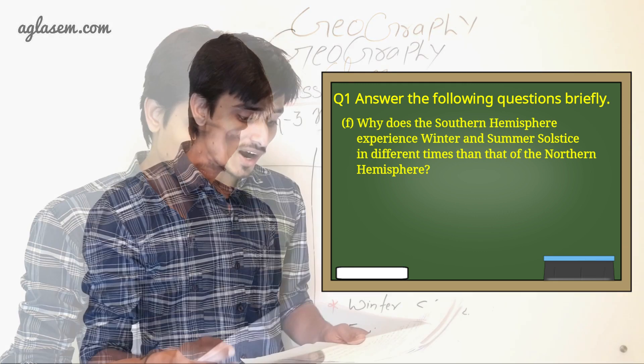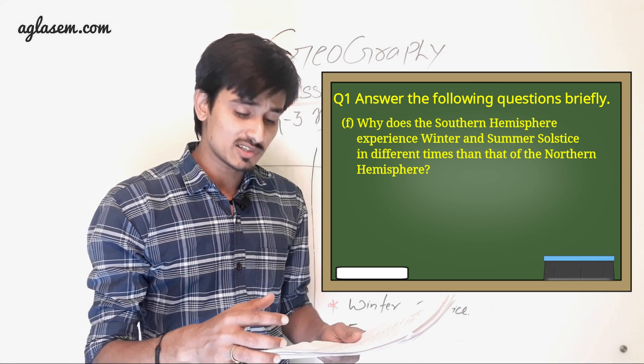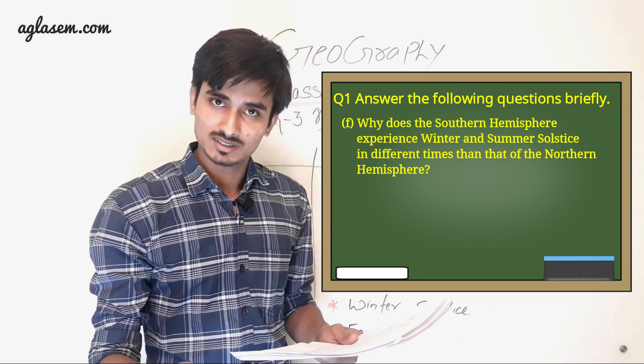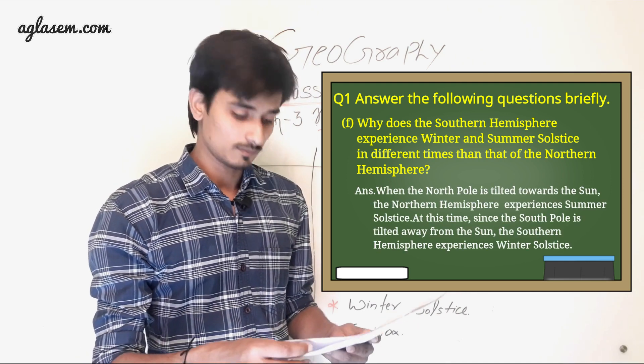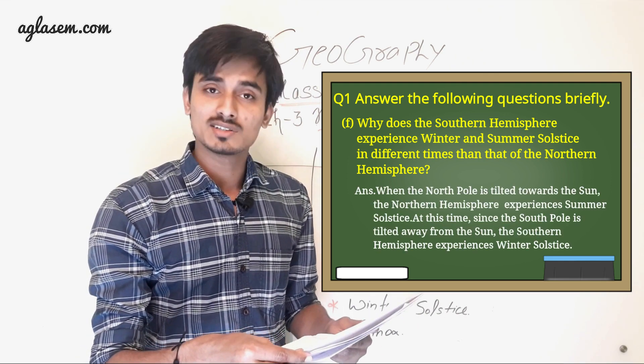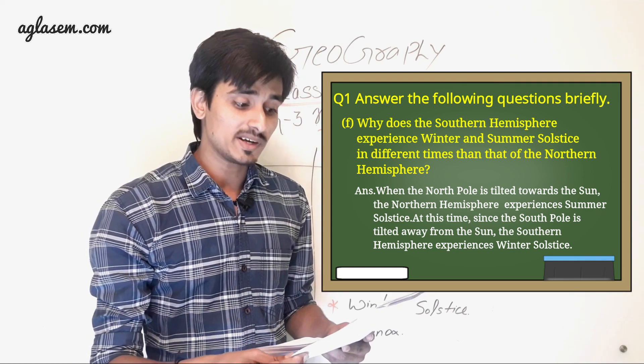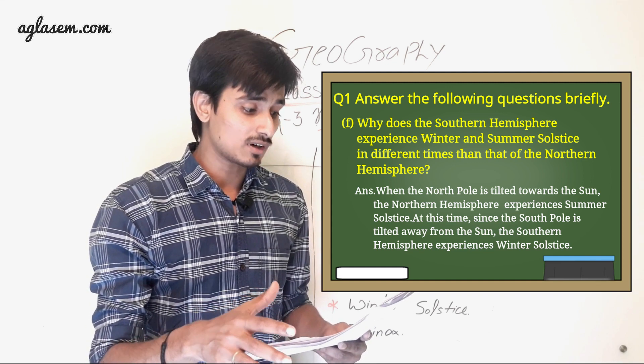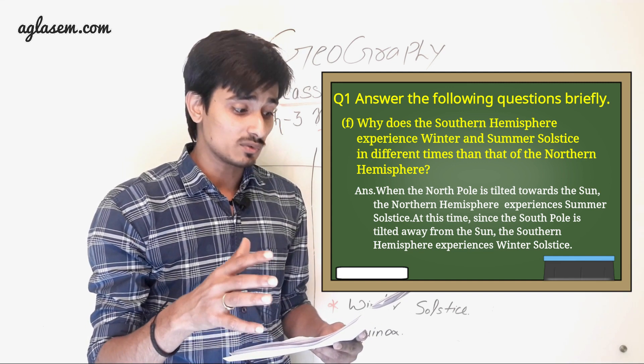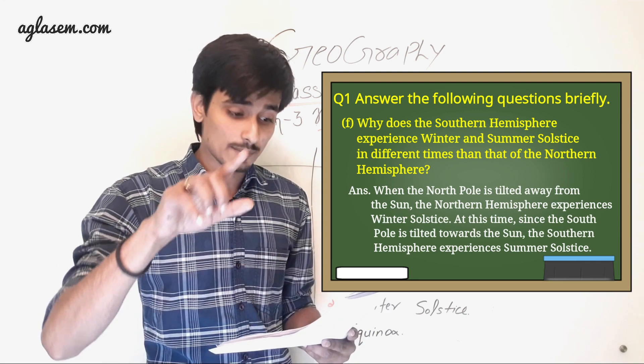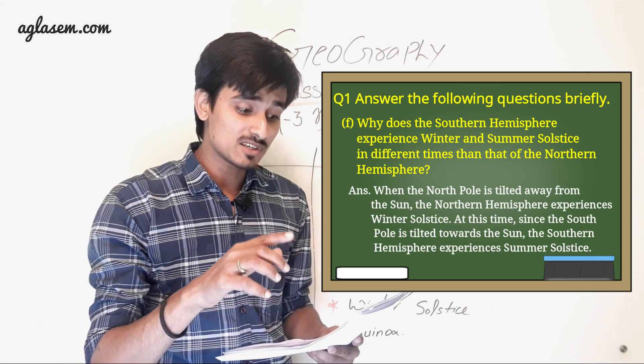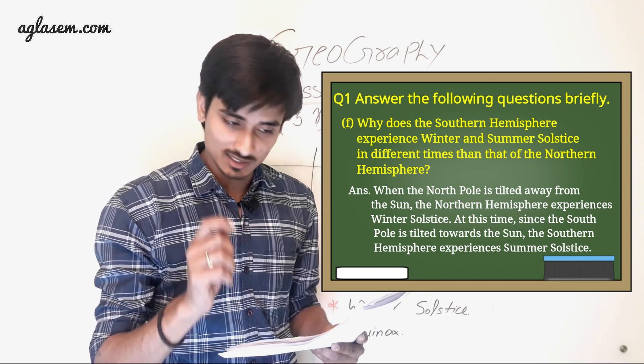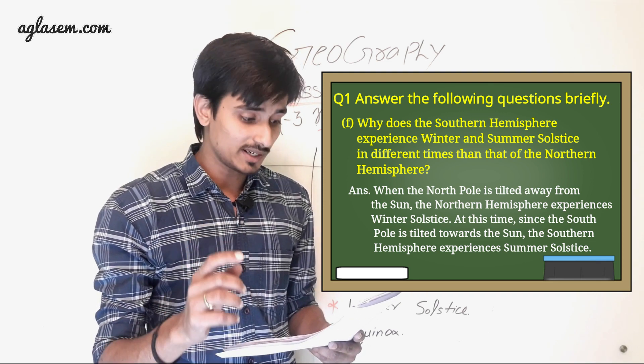F. Why does the Southern Hemisphere experience winter and summer solstice in different times than that of the Northern Hemisphere? So answer is: When the North Pole is tilted towards the Sun, the Northern Hemisphere experiences summer solstice. At this time, since the South Pole is tilted away from the Sun, the Southern Hemisphere experiences winter solstice. When the North Pole is tilted away from the Sun, the Northern Hemisphere experiences winter solstice. At this time, since the South Pole is tilted towards the Sun, the Southern Hemisphere experiences summer solstice.